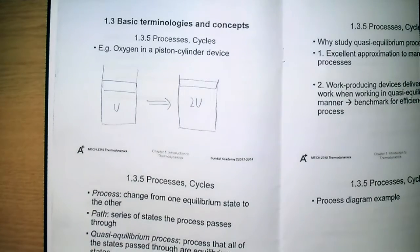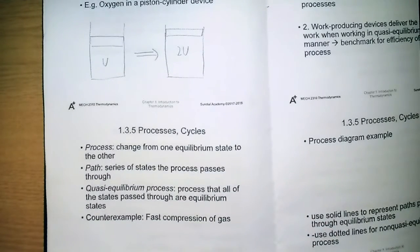And the change from the start one to the end one, we call that a process. The word path refers to a series of states the process passes through. We usually draw a diagram to describe the process, which indicates the initial and final state, the path, as well as the relationship with the surroundings.